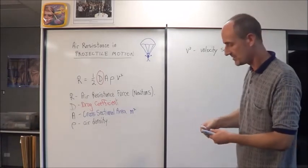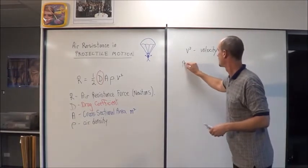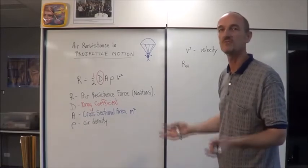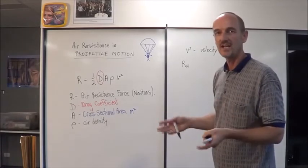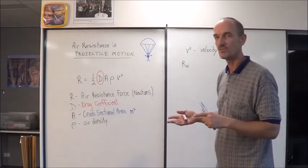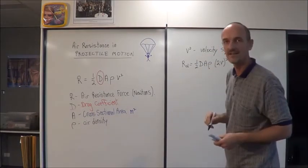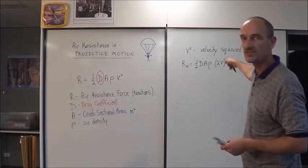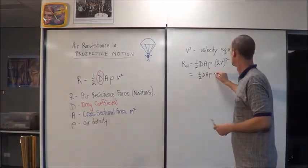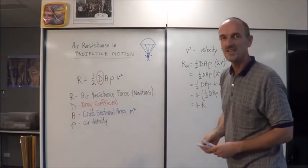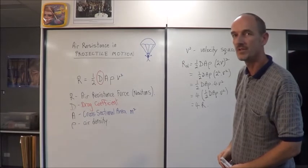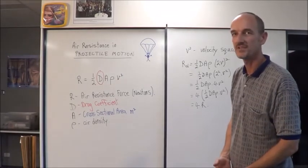I'll give you an example. If we looked at a new air resistance force where everything was kept the same - the object was identical, the air density and drag coefficient, everything exactly the same - except we doubled the speed. What you would find is that the new air resistance would have 2v. Then we square all of that. If we work that out, you'll end up with 4 times the original resistance value. So doubling your speed means 4 times the air resistance.